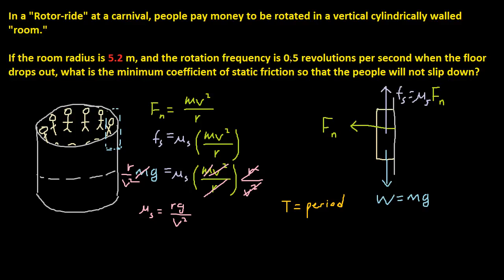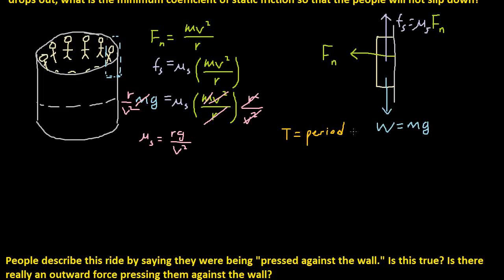So if you convert this to seconds, how many revolutions does it do in a second? Well, since it's 0.5 revolutions per second, it would be 1 revolution per 2 seconds. So the period would be 2.